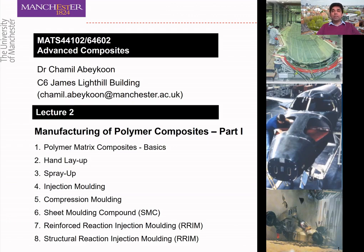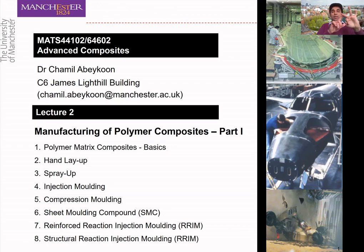In this lecture I'm going to look at a number of different techniques used to manufacture polymeric composites: hand layup, spray up, injection molding, compression molding, sheet molding compound, reinforced reaction injection molding, and structural reaction injection molding. Some of these manufacturing techniques for polymeric composites could be really simple. I'm not going to cover all the processes in the same capacity — for some I'll look at the basic level, covering the main processing steps, materials used, advantages and disadvantages, components, and applications.